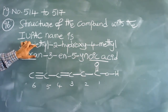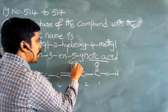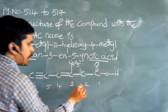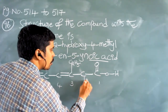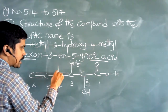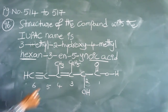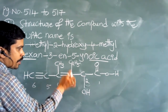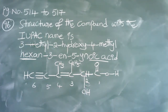Coming to the substituents: '3-ethyl' means C3 has an ethyl group (–C2H5); '2-hydroxy' means C2 has an OH group; '4-methyl' means C4 has a methyl group (–CH3). The remaining positions get their hydrogens. So this should be the complete structure of 3-ethyl-2-hydroxy-4-methylhexane-3-ene-5-inoic acid.